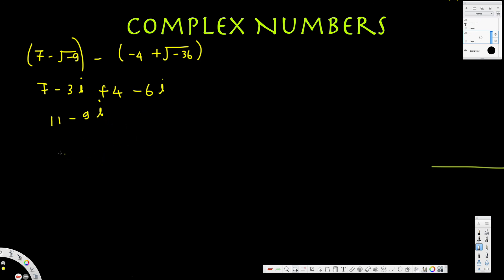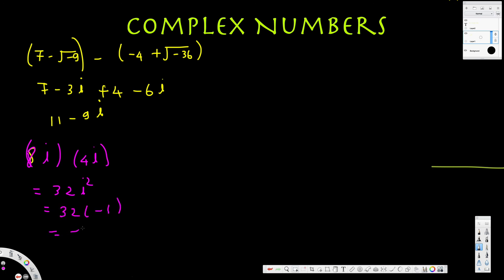Now let's look at a multiplication example: 8i times 4i. We know 8 times 4 is 32, and i times i is i squared. Since i is the square root of negative 1, i squared equals negative 1. So 32 times negative 1 gives us negative 32.